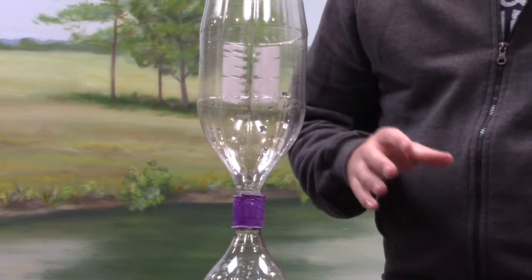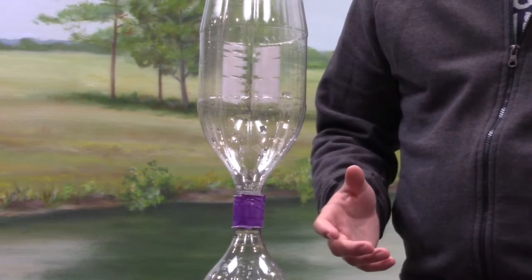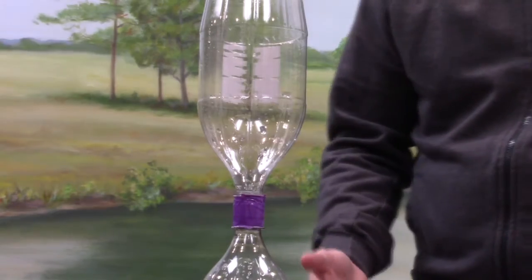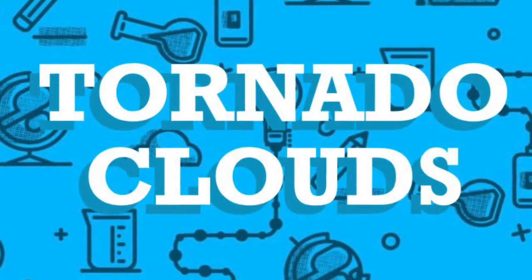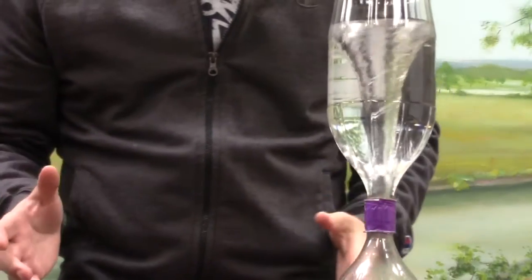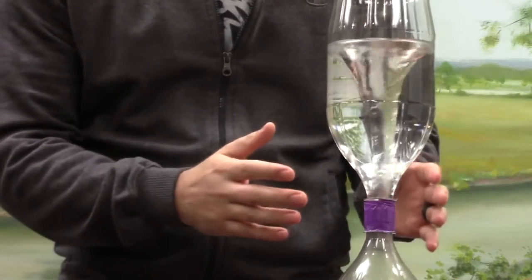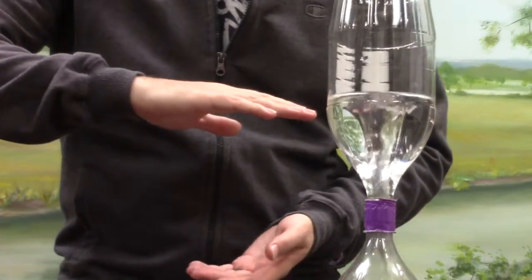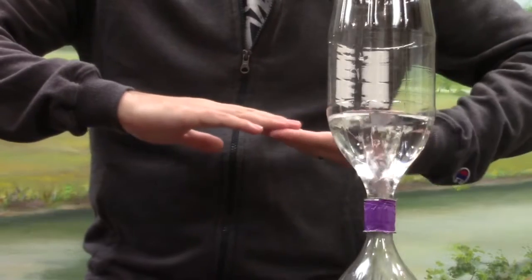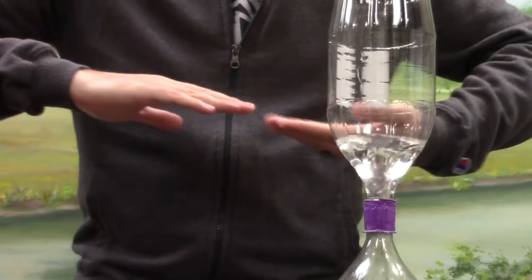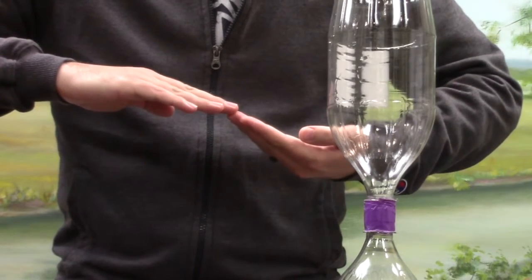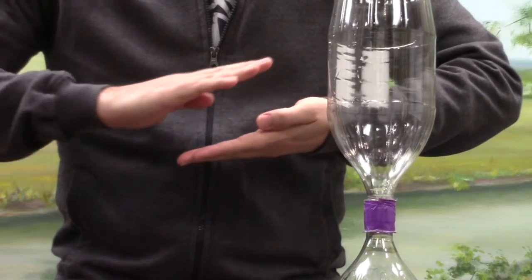But we also see this in the air and the clouds when we have tornadoes. So what's happening with the clouds in a tornado? This vortex that we see in a tornado, this actually would start horizontal in the air. Because we have wind flowing from one direction and wind blowing from the other direction.